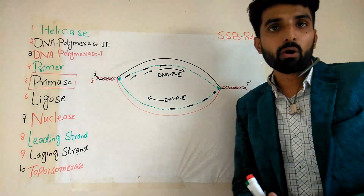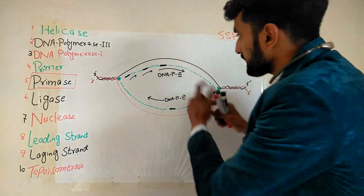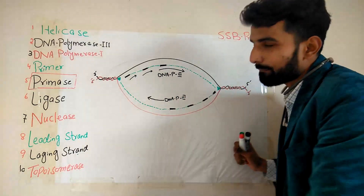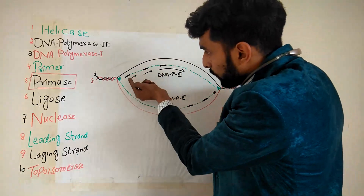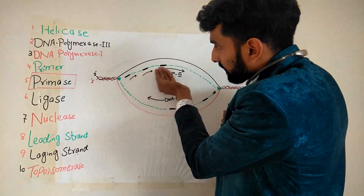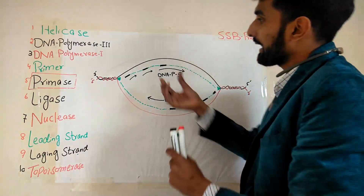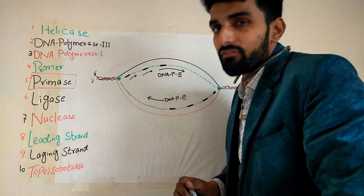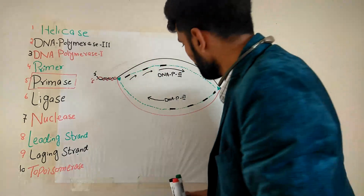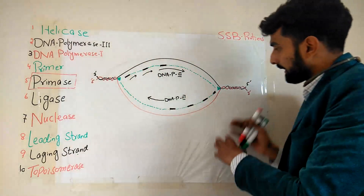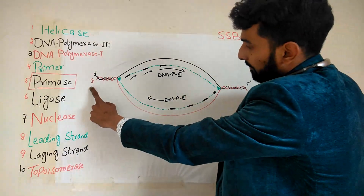Hello friends, welcome back. We were talking about replication. The strand moving toward the replication fork is the leading strand, and the strand moving away from the replication fork is called the lagging strand. The leading strand is continuous, and the lagging strand has small Okazaki fragments present between the primers.